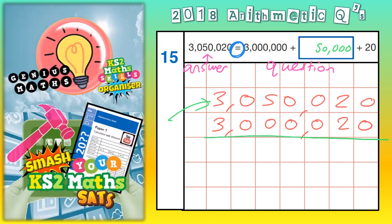So let's just double check. 0 take 0 is 0. 2 take 2 is 0. 0 take 0 is 0. 0 take 0 is 0. 5 take 0 is 5 — and that's our 50,000. Then 0 take 0 is 0, and 3 take 3 is 0. So basically you've just got 50,000 left. You don't really need these two 0s here because they're at the start of the numbers, so we've just got 50,000 left, which is what we wrote on our answer.